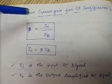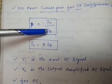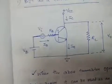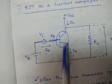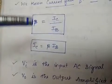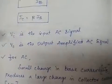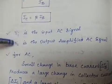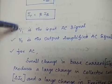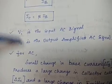We know the current gain for CE configuration: beta equals Ic divided by Ib. Current gain means output current divided by input current. In this circuit, the output current is Ic and the input current is Ib. So beta equals Ic over Ib, which means Ic can be written as beta times Ib. Vi is the input AC signal and Vout is the output amplified AC signal.